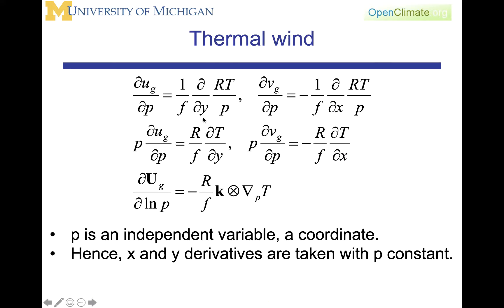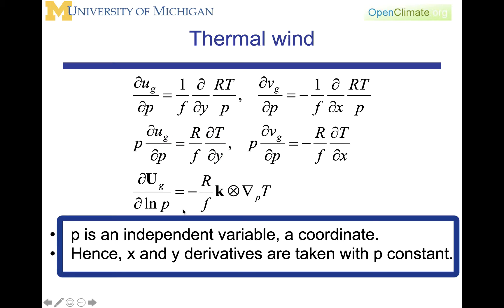We can manipulate this equation further by rearranging the variables. R is a constant. f is a constant with respect to p. Therefore, we have this constant out front. And we're also going to pull out p, recognizing that p is an independent variable. It's a coordinate. Hence, by definition, the x and y derivatives are taken with p constant.